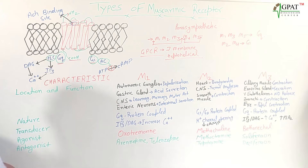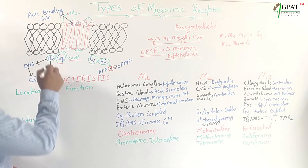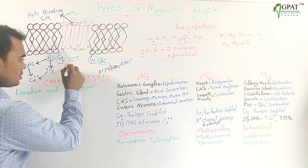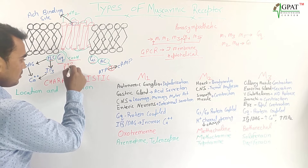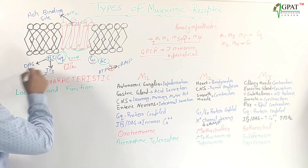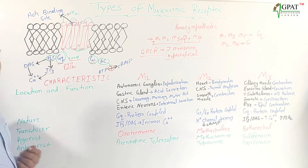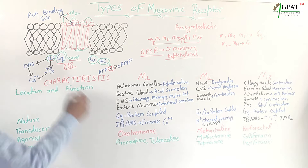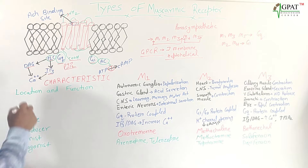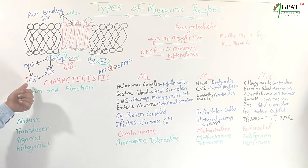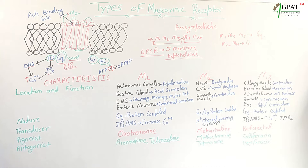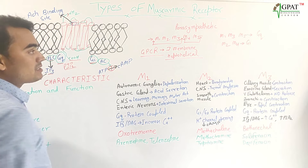When the Gq protein is activated by the odd-numbered receptors — M1, M3, M5 — this Gq protein further activates PLC (phospholipase C). Phospholipase C converts PIP2 (phosphatidylinositol 4,5-bisphosphate) into IP3 (inositol 1,4,5-trisphosphate) and DAG (diacylglycerol). IP3 and DAG together increase intracellular calcium ions, which carries out contraction.